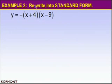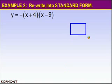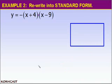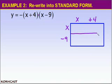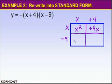In example two, we're going to rewrite this equation in standard form. Please notice that there is a product in this equation. So the first thing I want to do is multiply x plus 4 times x minus 9. I'm going to use the area model to do that multiplication, with x plus 4 along the top and x minus 9 along the side. X times x is x squared, x times 4 is positive 4x, negative 9 times x is negative 9x, and negative 9 times 4 is negative 36.